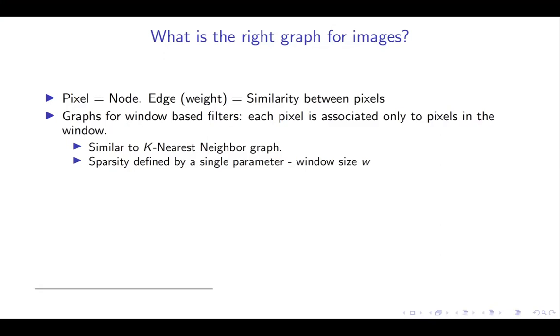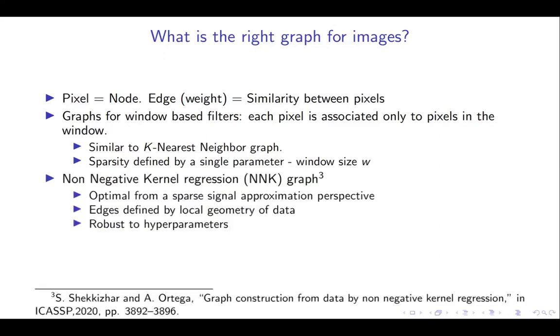As an alternative, we consider here a recent work on graph learning, the non-negative kernel regression graph. NNK graphs considers the problem of graph construction from a sparse signal approximation perspective and is optimal from this point of view. Further, they have interpretable connectivity where edges are defined by the local geometry of data and is robust to hyperparameters.